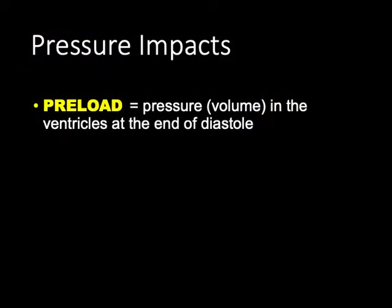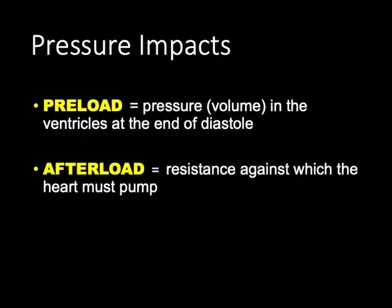When we think about the components that make up blood pressure, we need to consider preload, which is the pressure in the ventricles at the end of diastole — closely tied to volume. Afterload is the resistance against which the heart must pump. Preload refers to how much pressure is coming into the ventricles, and afterload is how much pressure those ventricles must push against in order to successfully move blood forward.